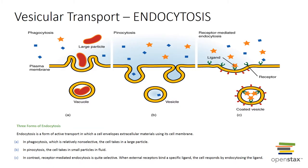Vesicular transport has different types. Exocytosis transports something out of a cell — 'exit' is a good way to remember that. Endocytosis transports something into the cell. Transcytosis moves something into, across, and then out of the cell. Vesicular transport requires cellular energy in the form of ATP and often involves the formation of protein-coated vesicles. These processes are often receptor-mediated and very selective.